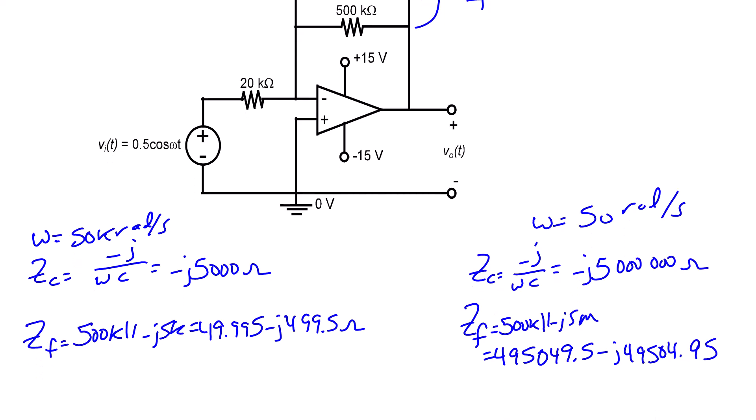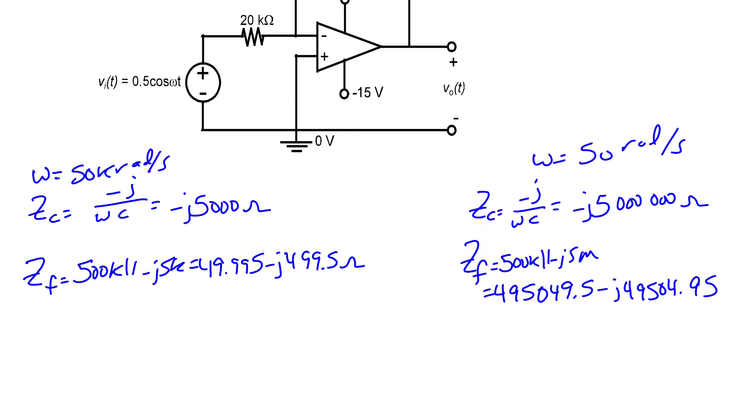Since this is an inverting amplifier, we can use that V0 equals negative ZF over ZI times VI, or negative 49.995 minus j 49,499.5 over 20k times 0.5, which equals 12.55 with an angle of 96 degrees in millivolts. So that's a very small value.